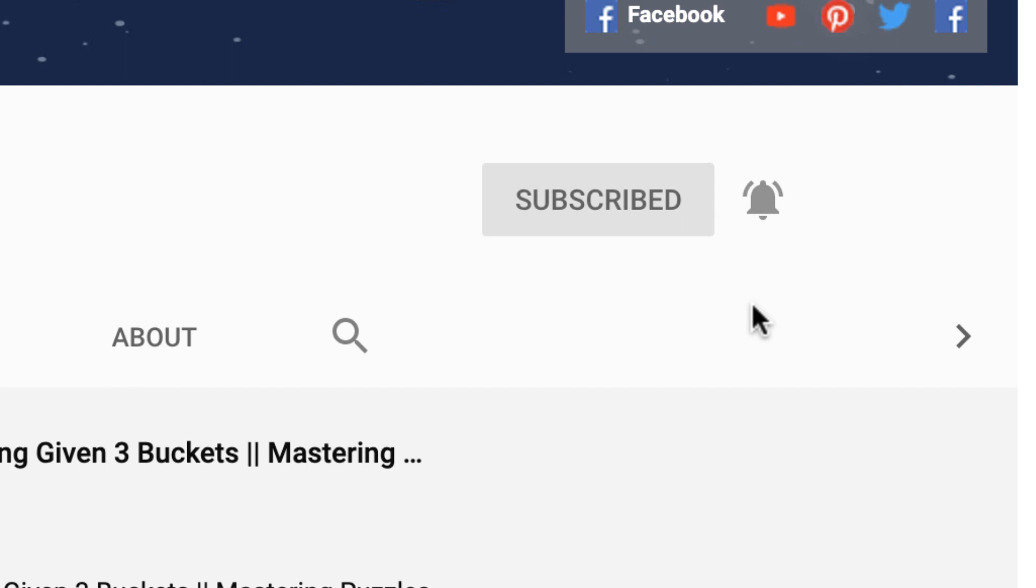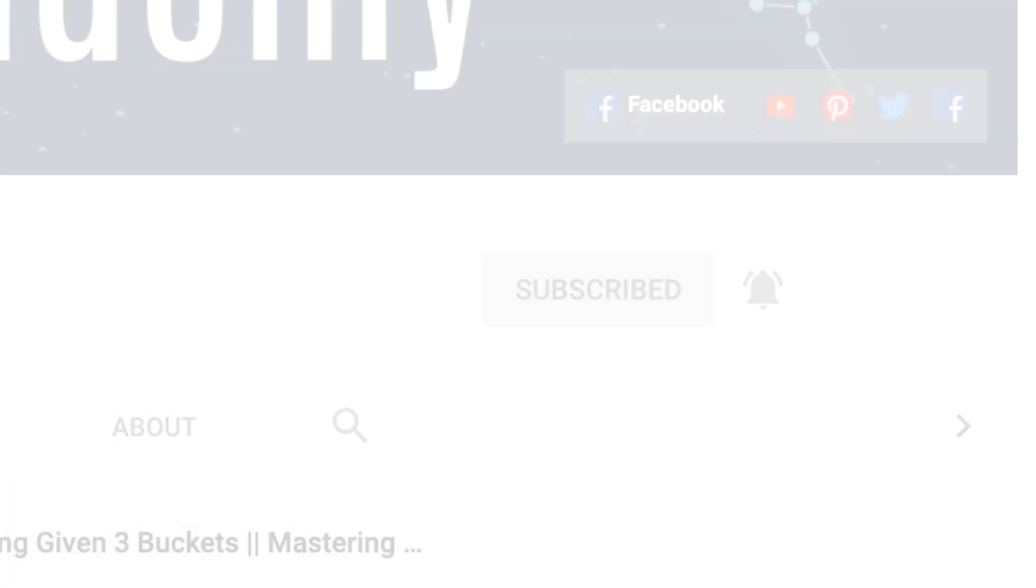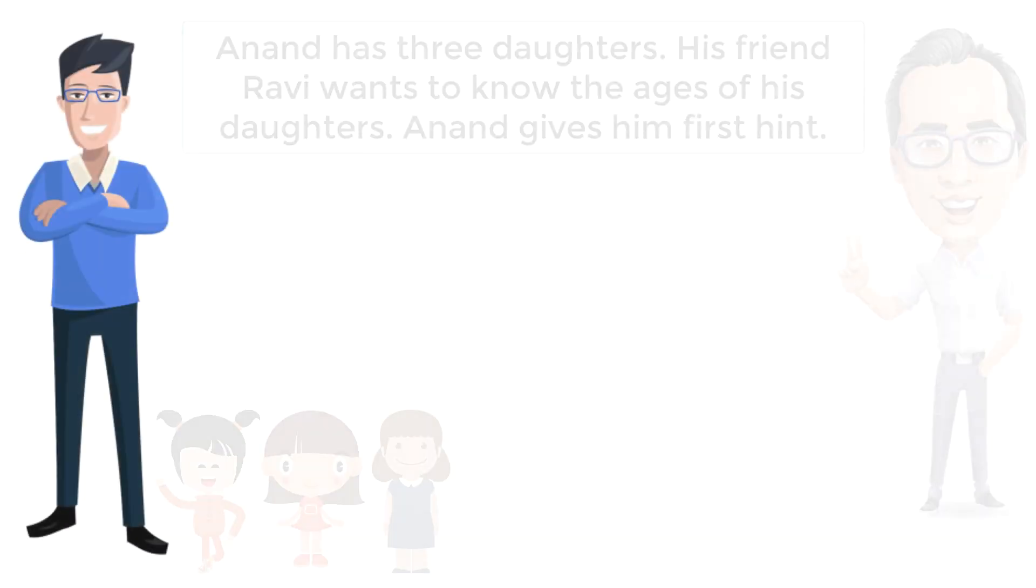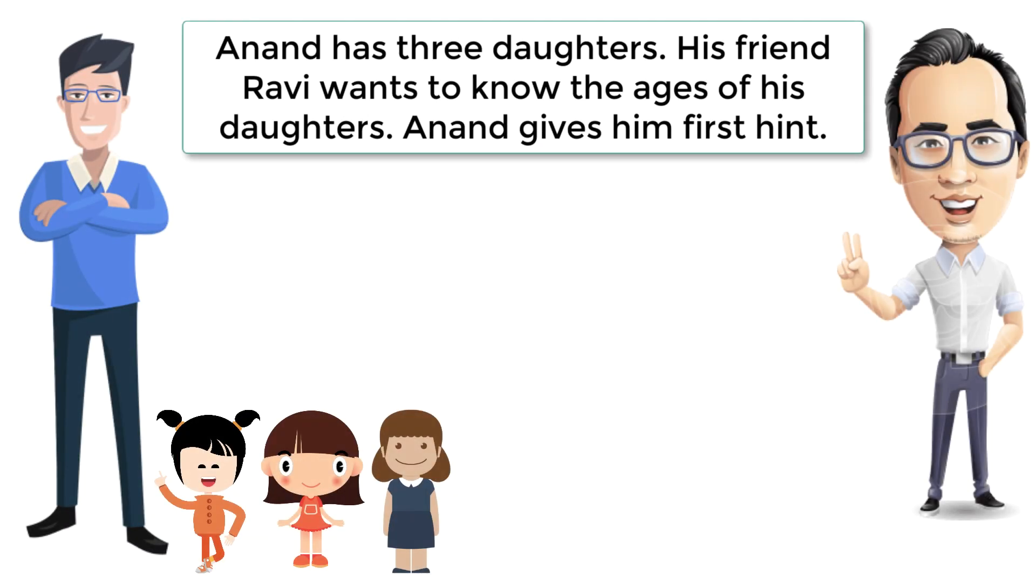Here goes the puzzle. Anand has three daughters. His friend Ravi wants to know the ages of his daughters.